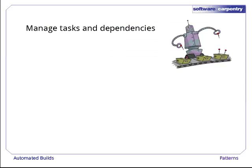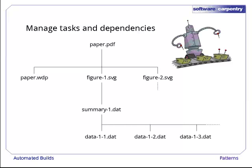As we said in earlier episodes, we're exploring a tool that will manage tasks and dependencies for us. Here are the dependencies for the paper the robot is working on. Paper.pdf depends on paper.wdp, figure1.svg, and figure2.svg, while figure1.svg depends on summary1.dat, which in turn depends on all the files with names like data11.dat, data12.dat, and so on.